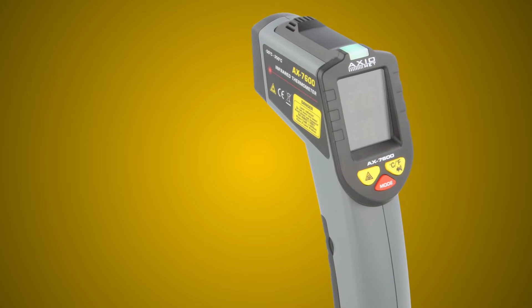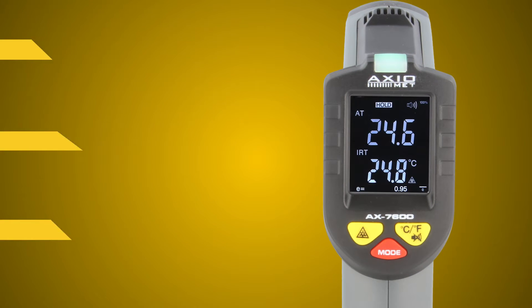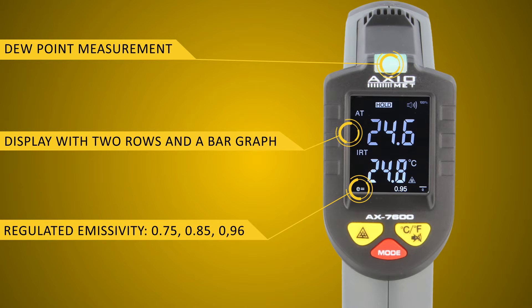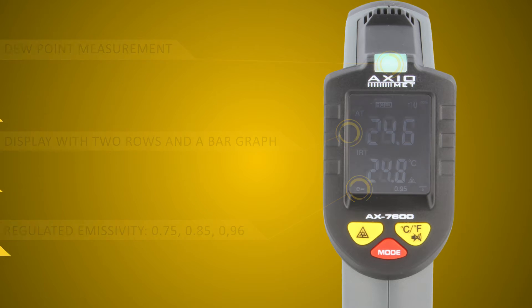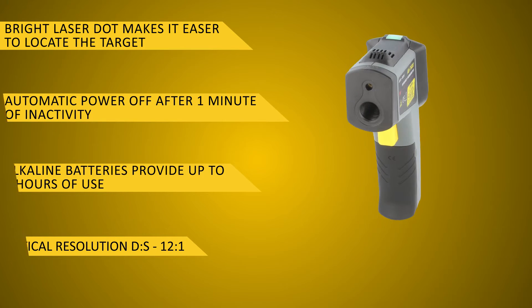The AX7600 pyrometer is intuitive and easy to use. It has a clear display with two rows of digits and a bar graph. It's designed for contactless humidity and infrared temperature measurements.